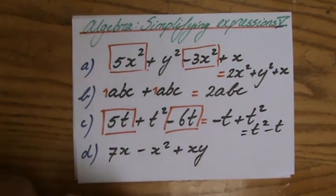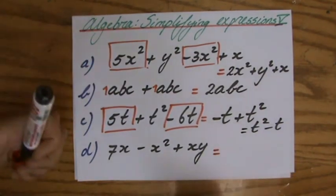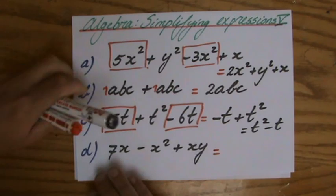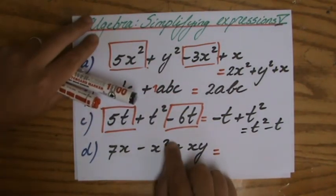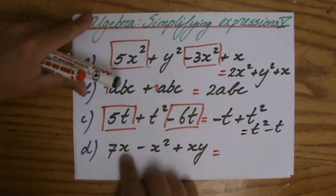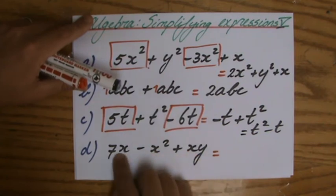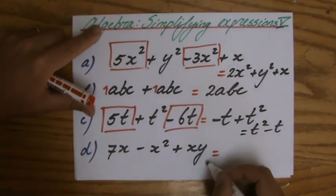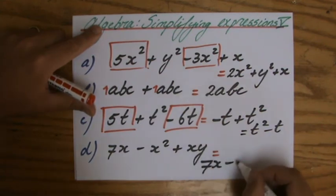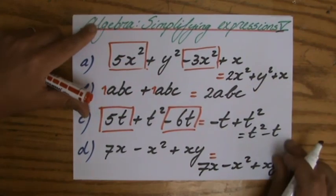Last but not least, question d: 7x minus x² plus xy. Do I have any like terms? Well, I have an x here, but that is x², so x times x—those are not like terms. And that is xy, and I don't have any other term with xy either, so I can't simplify this expression any further. That is already the simplest form.